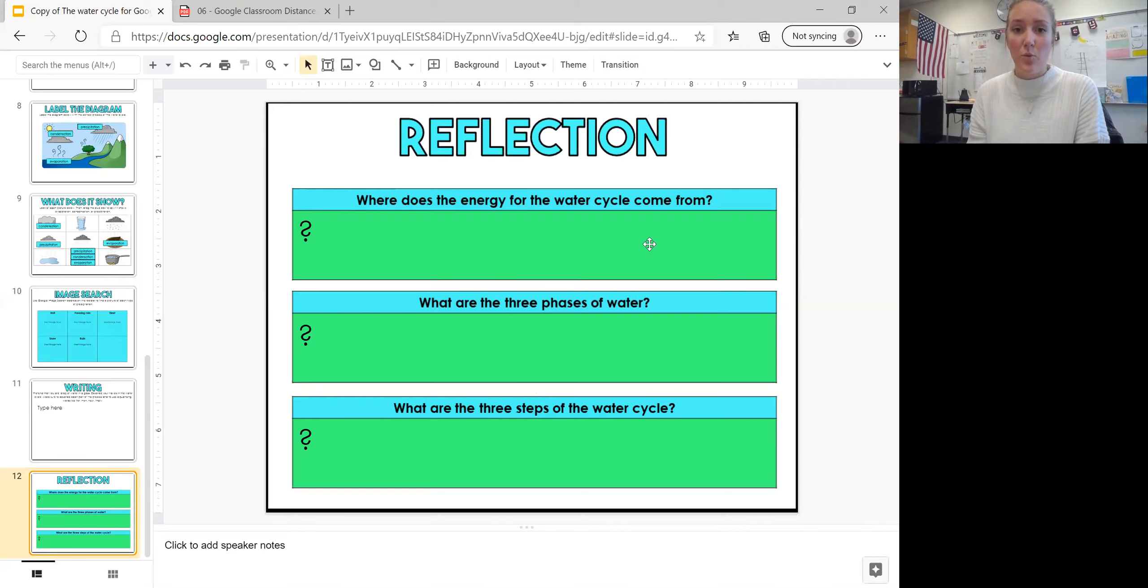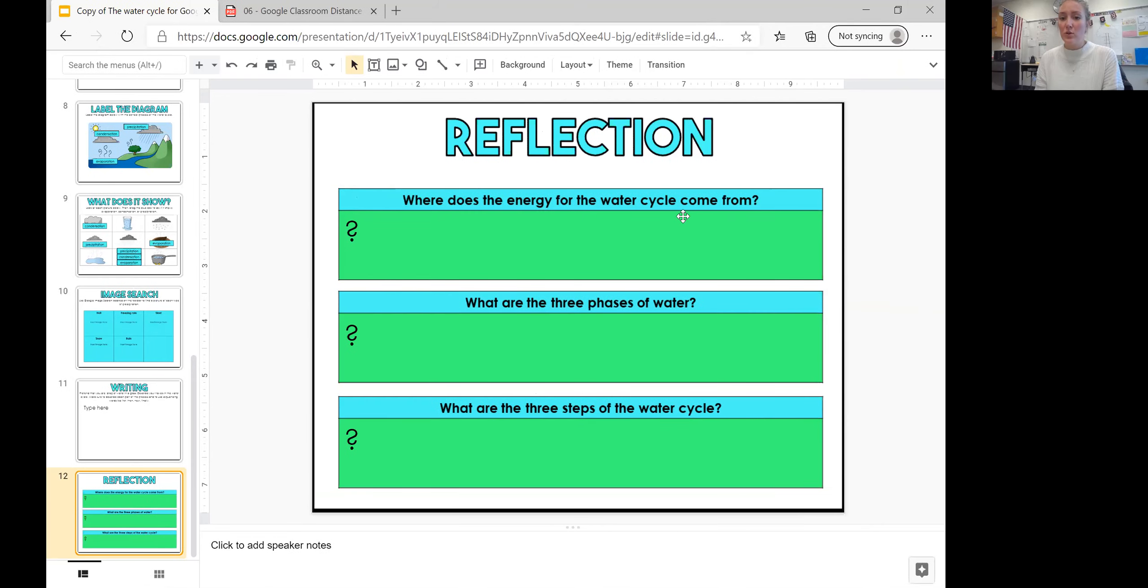I want you to think, where does the energy for the water cycle come from? What has to happen before water is evaporated? Heat. The sun needs to get the water warm so it will evaporate.